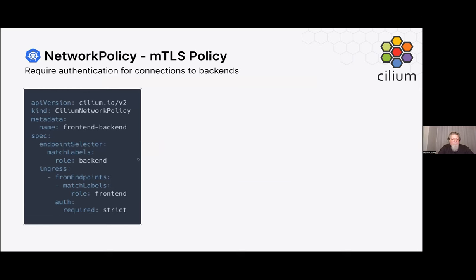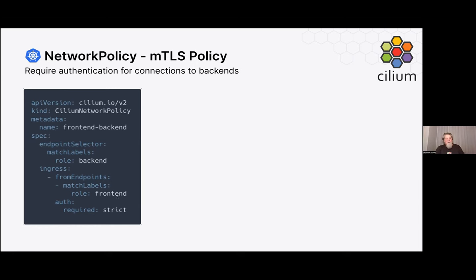This is an example of what the mutual authentication policy would look like. If you want to require authentication for connections to backends, this is a Cilium network policy that enables it. When you enforce auth required strict, you're saying that all workloads matching role backend, when handling ingress traffic from match labels role frontend, must authenticate that traffic before it can begin.